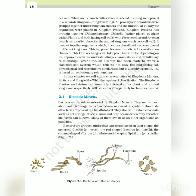Bacteria are the sole members of the Kingdom Monera. They are the most abundant microorganisms. Bacteria occur almost everywhere - hundreds of bacteria are present in a handful of soil. They also live in extreme habitats such as hot springs, deserts, snow and deep oceans where very few other life forms can survive. Many of them live in or on other organisms as parasites. Bacteria are grouped under four categories based on their shape: the spherical coccus, the rod-shaped bacillus, the comma-shaped vibrium, and the spiral spirillum, as shown in Figure 2.1.